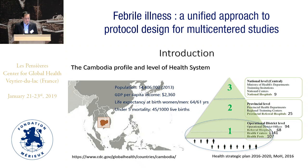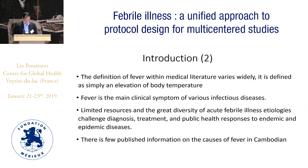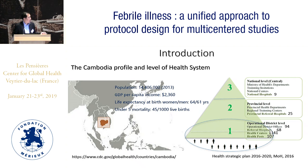The health system in Cambodia is divided into three levels. The first level covers health centers, referral, and district hospitals. The second level covers all provincial hospitals. The third level covers national hospitals, which are mainly situated in the capital.